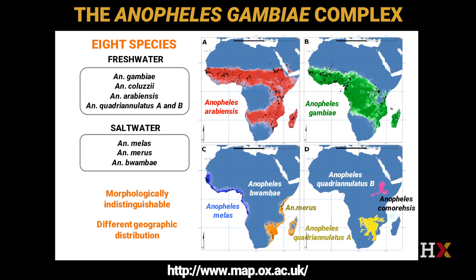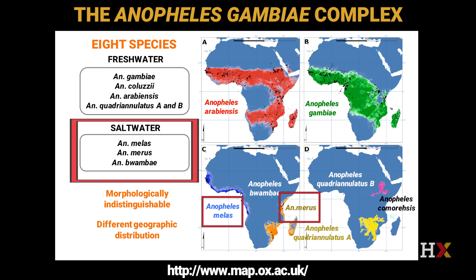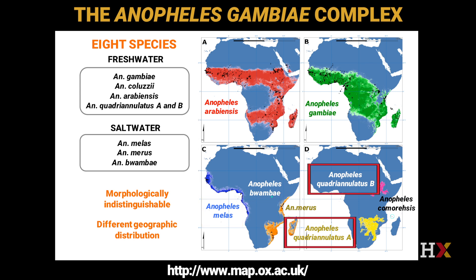In any given area, there might be multiple Anopheles species that live in sympatry, and this might complicate control measures. For instance, the Anopheles gambiae complex comprises eight mosquito species that are morphologically identical and can only be distinguished at the molecular level. These species include some of the most important malaria vectors, such as Anopheles gambiae, Anopheles arabiensis, and Anopheles coluzzii, as well as some more minor vectors, like Anopheles merus, which are adapted to coastal areas because they prefer breeding in salt water. The complex also includes some species not considered vectors of human malaria, such as Anopheles quadriannulatus, because they tend to bite predominantly on animals.